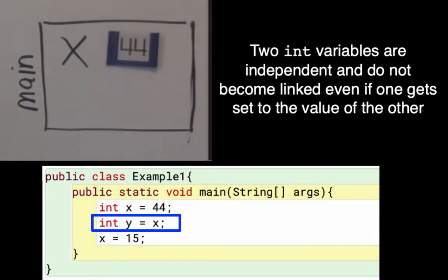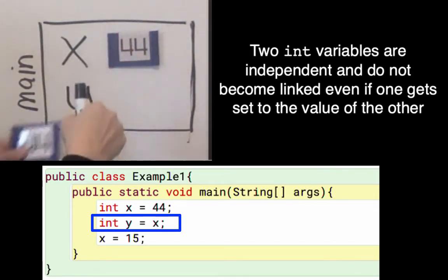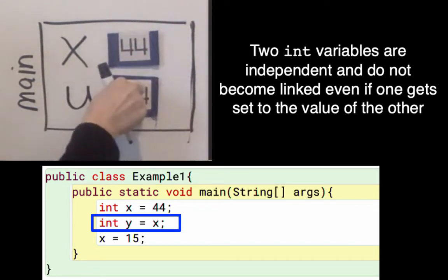Next we say int y gets x. So that's gonna create a variable named y. And for its value, it gets a copy of whatever x is. So it's also gonna get set to 44.